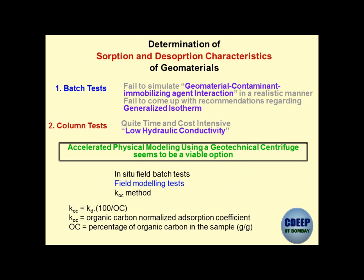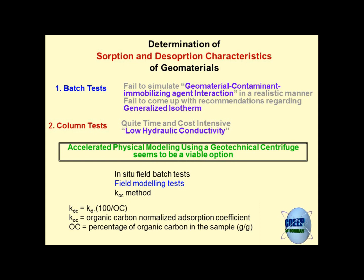Determination of sorption and desorption characteristics of geomaterials: there are 2 types of tests — batch test and column test. In the batch test, you take a certain volume of liquid with contaminants and add a certain amount of solids — say, 100 ml of contaminated water and 5 grams of soil. You shake it well and keep measuring the concentration of contaminants in the solution. Whatever drop in concentration occurs is getting sorbed onto the solids.